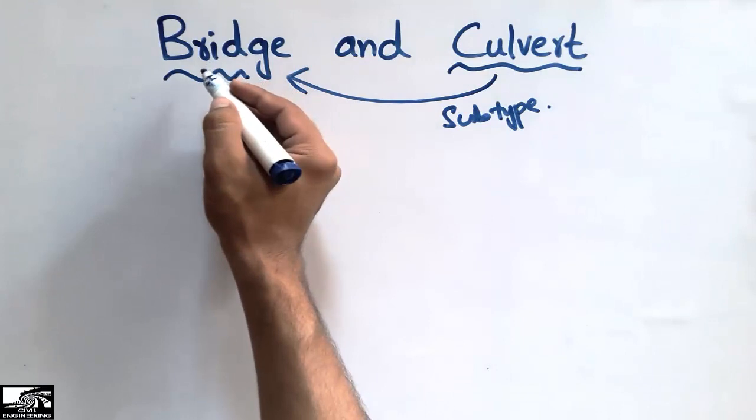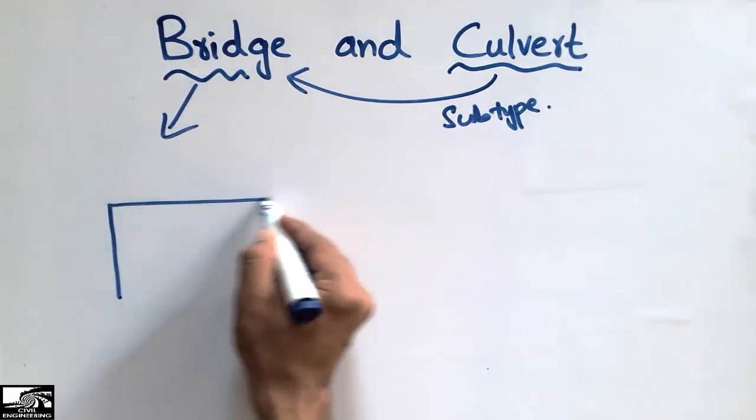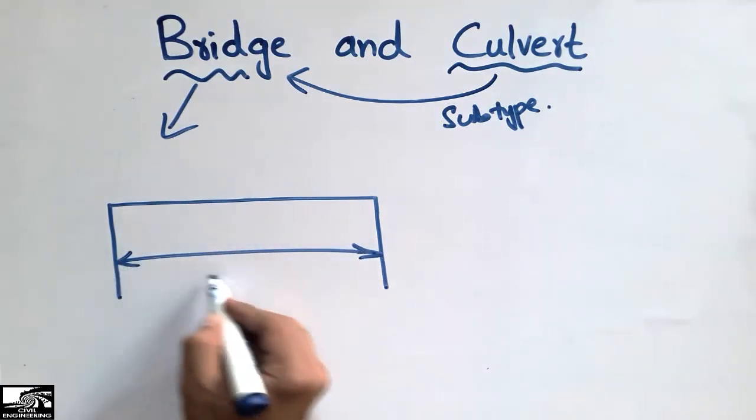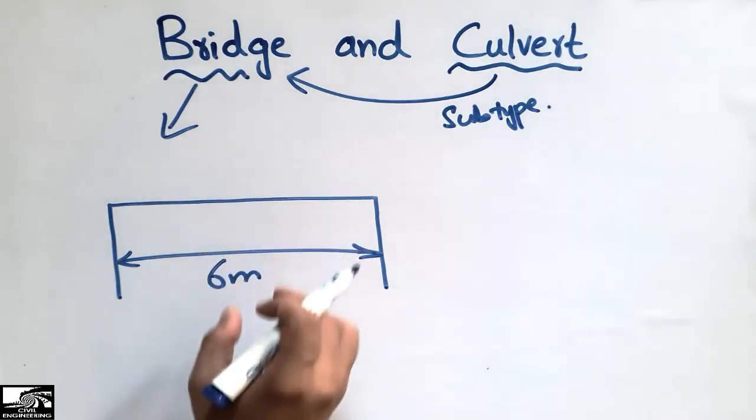Now the bridge can be defined as when the length of the whole structure, when it's greater than 6 meters, we call this type of structure the bridge. When the total length of the structure is greater than 6 meters, we call it the bridge.